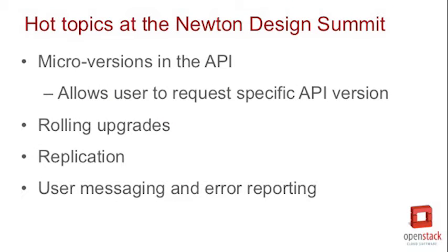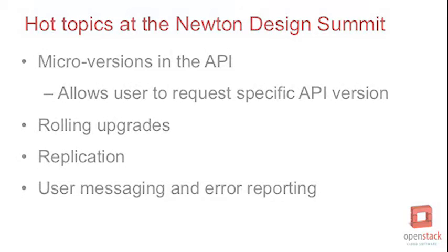A lot of the discussion from Austin was probably not too interesting for end users directly. We had a lot of changes in Mitaka that affect different things that the developers working on the code need to be aware of — things like implementing micro versions in the API and doing things like rolling upgrades. Hopefully these features, as they mature, will actually be useful to the end user.